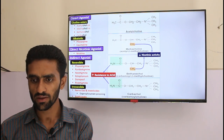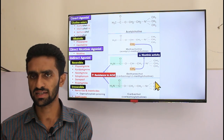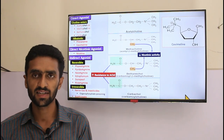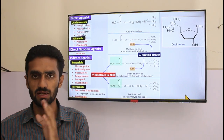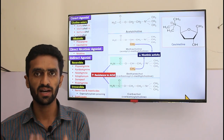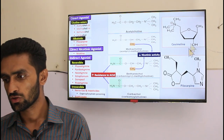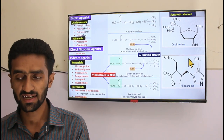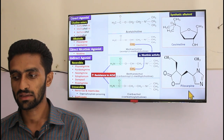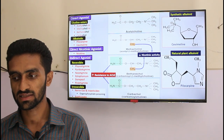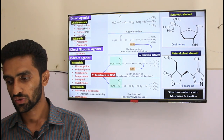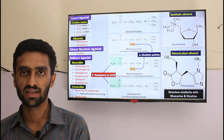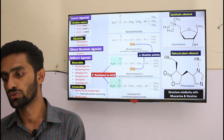Alkaloids have a totally different structure with similarity to muscarine and nicotine, which is why they work. Cevimeline is a synthetic alkaloid while pilocarpine is a natural plant alkaloid. Their structural similarity with muscarine and nicotine allows them to be clinically used.